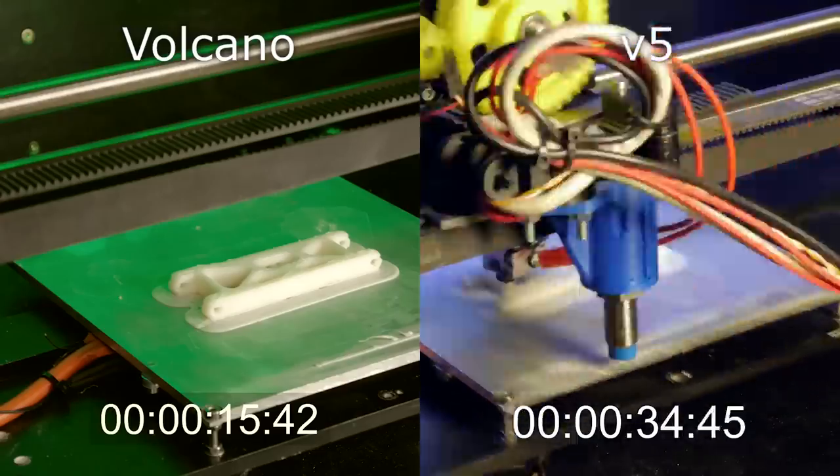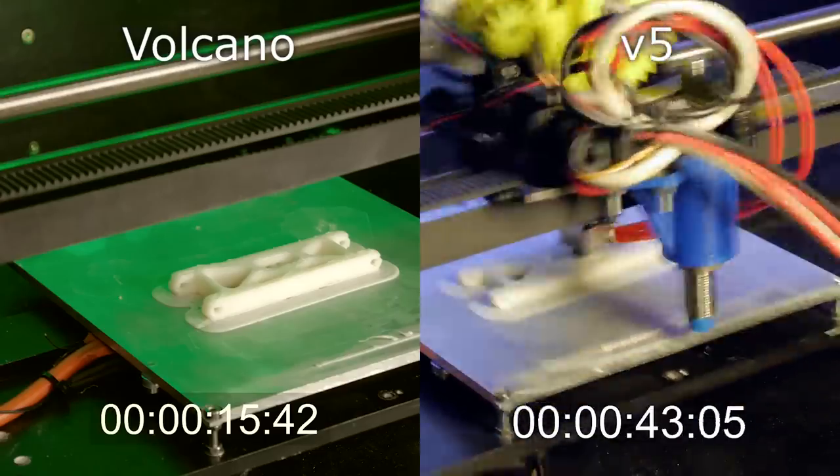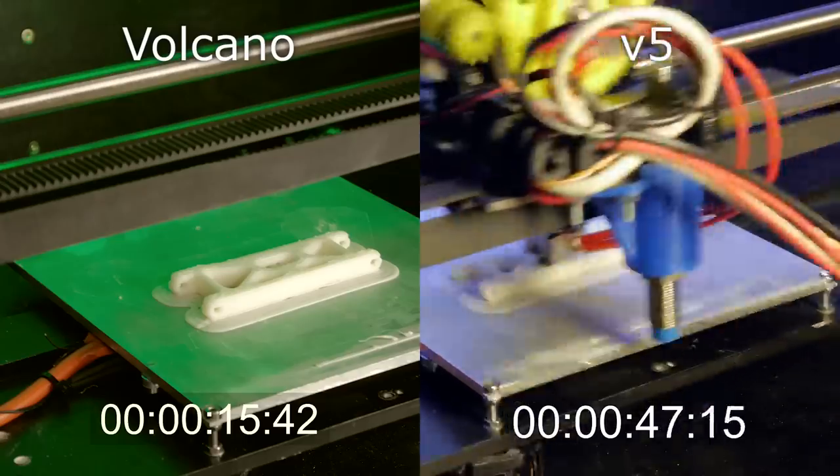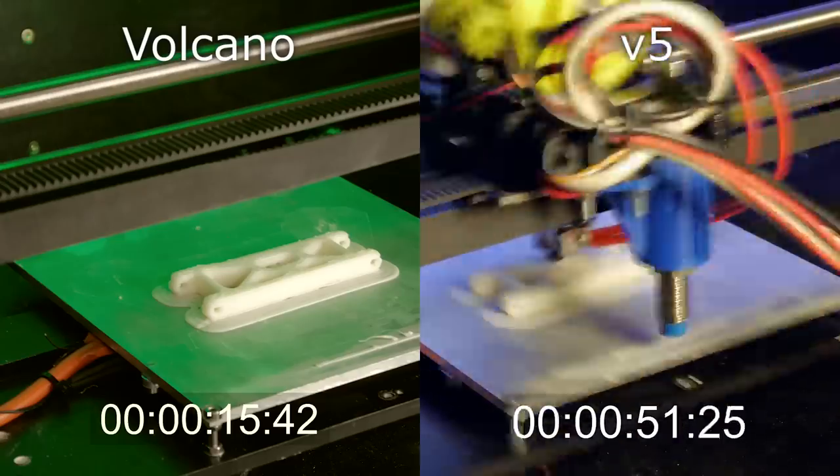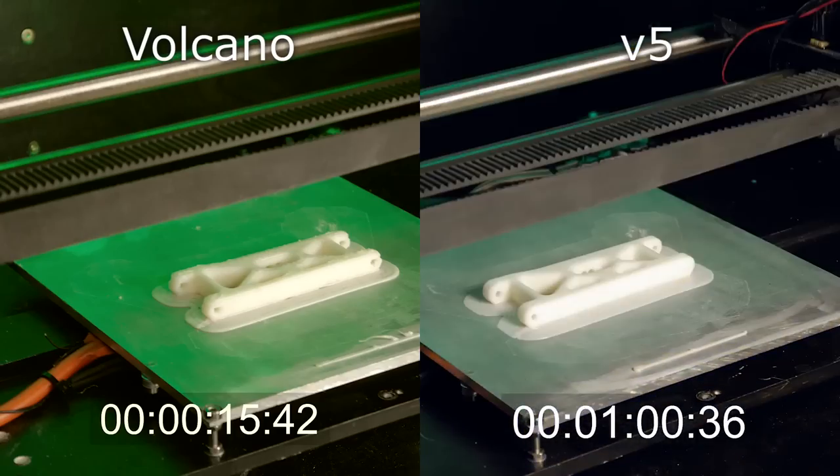One other thing that you initially don't think about is that slicing and transferring files also gets faster, as there is simply much less data to be processed. Well, that's, again, probably not so much of an issue for smaller prints, it does make a very noticeable difference on the machines that the Volcano is intended for.